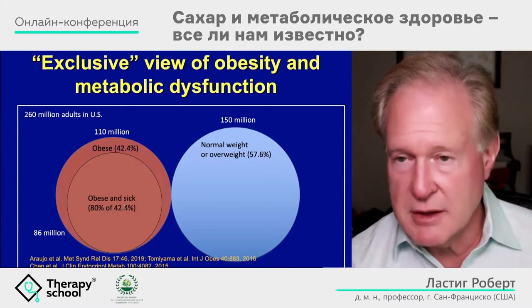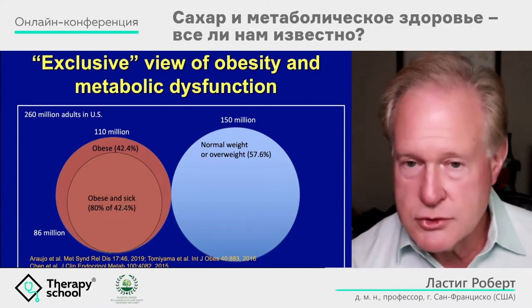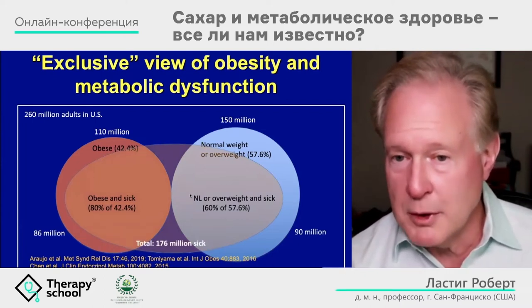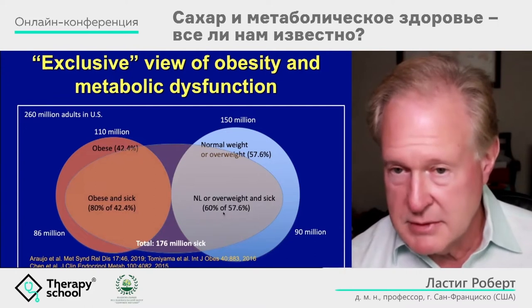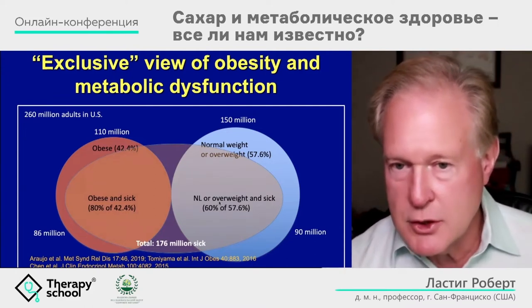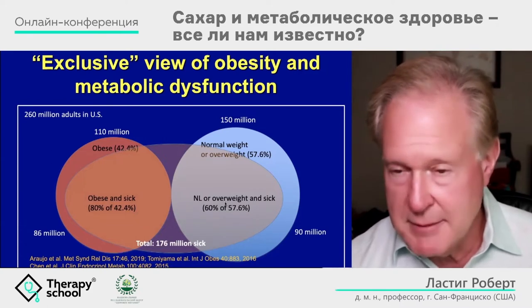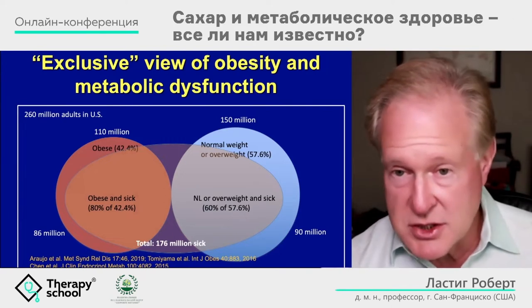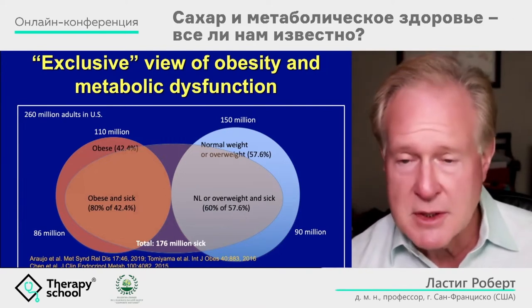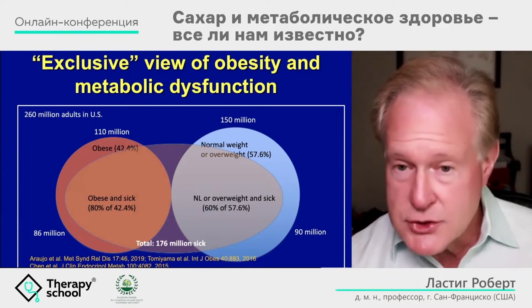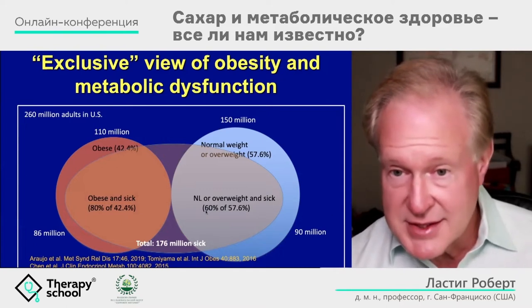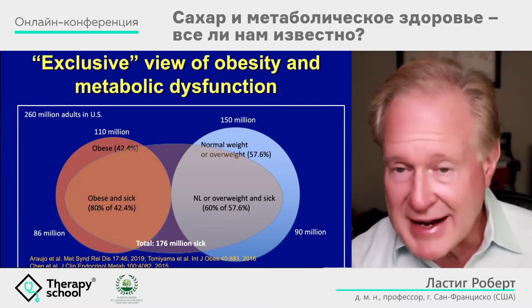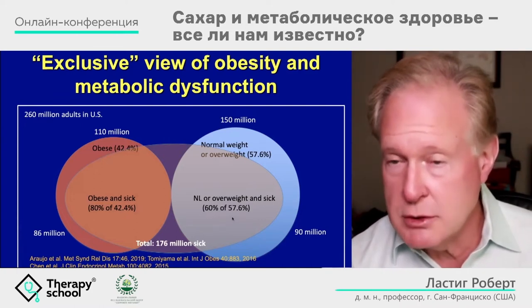If they would only diet and exercise, we could solve the problem. This is untrue. Sixty percent of the normal-weight population have the exact same diseases as the obese: type 2 diabetes, hypertension, dyslipidemia, cardiovascular disease, cancer, dementia, and fatty liver disease. Obesity is a risk factor, but if normal-weight people get it too, how can it be a cause?